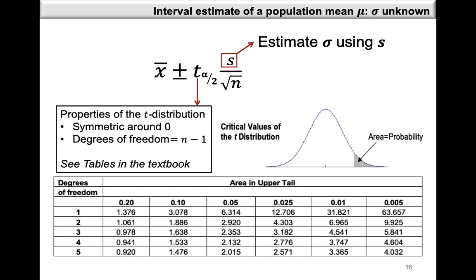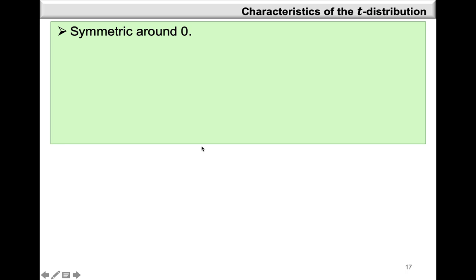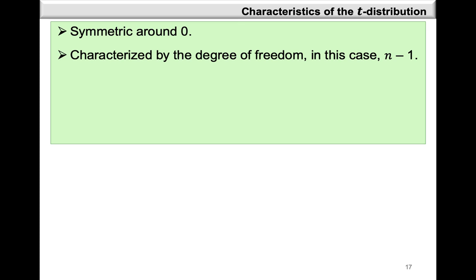This t value comes from the t-distribution. The t-distribution is symmetric around zero and it is characterized by a parameter that we call the degrees of freedom, calculated as n minus 1. The t-distribution gives you the area to the right of a value, and this is different from the z, because the z-tables give you the area to the left of a value. The degrees of freedom in this case are calculated as n minus 1.